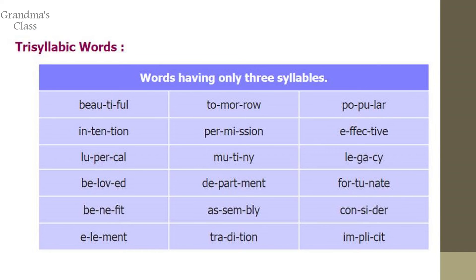Next one is trisyllabic words — words having three syllables. Examples: beautiful, tomorrow, popular, intention.